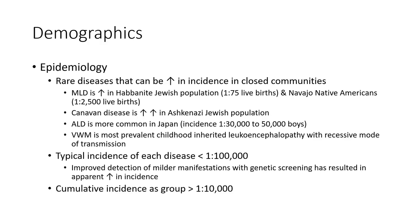Demography and epidemiology: these are rare diseases that can have increased incidence in close communities. GLD is increased in the Ashkenazi Jewish population — 1 in 75 live births — and in Navajo Native Americans — 1 in 2,500 live births. Canavan disease is also increased in the Ashkenazi Jewish population. ALD is more common in Japan.